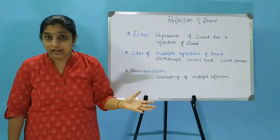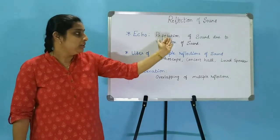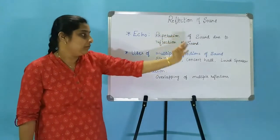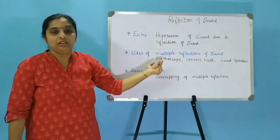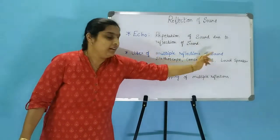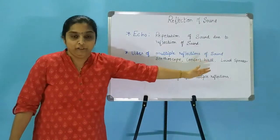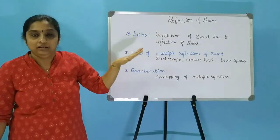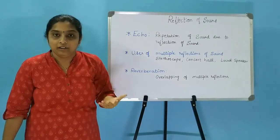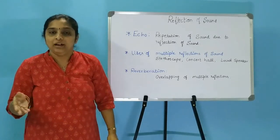Let us have a quick recap. Echo is the repetition of sound due to reflection of sound. Multiple reflections of sound are used in stethoscopes, in the design of concert halls and auditoriums, and in loudspeakers. Reverberation is the overlapping of multiple reflections. In the next video, we will learn about uses of ultrasound. If you have any doubts, please feel free to post in the comment section below.